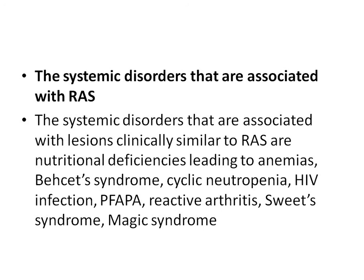The systemic disorders associated with RAS, or with lesions clinically similar to RAS, include nutritional deficiencies leading to anemias, Behçet syndrome, cyclic neutropenia, HIV infection, PFAPA, reactive arthritis, Sweet syndrome, and MAGIC syndrome. All these conditions are in the differential diagnosis of aphthous ulcers.